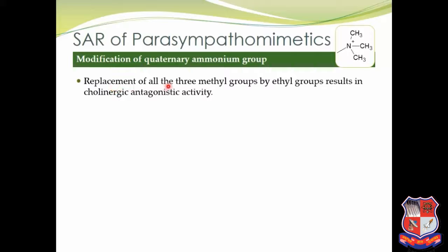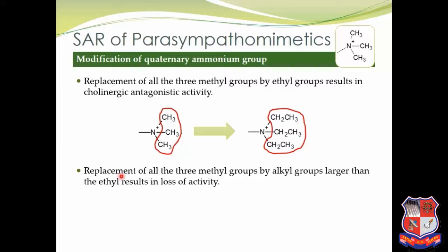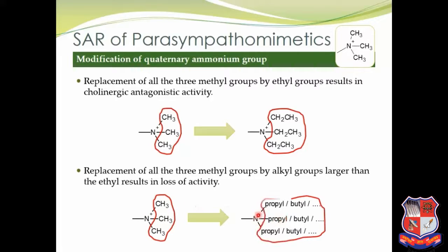Replacement of all three methyl groups by ethyl groups results in cholinergic antagonistic activity. Replacement of all three methyl groups on the quaternary ammonium group by three ethyl groups results in antagonistic activity. Next, replacement of all three methyl groups by alkyl groups larger than ethyl — meaning propyl, butyl, pentyl, and so on — results in loss of activity.